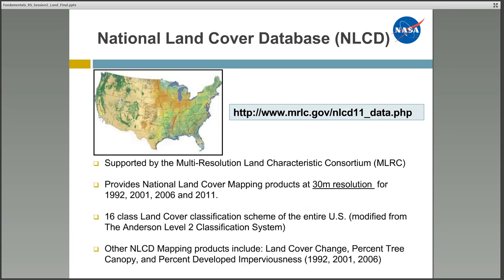The NLCD products include land cover type, percent impervious surface, and percent tree canopy cover at 30-meter spatial resolution. The database is available for 1992, 2001, 2006, and 2011, and is created using a 16-class classification scheme. It is based primarily on Landsat data, along with other data sources such as topography, census and agricultural statistics, soil characteristics, wetlands, and other land cover maps. The data are freely available at the website listed here.